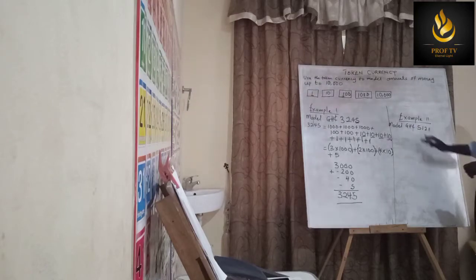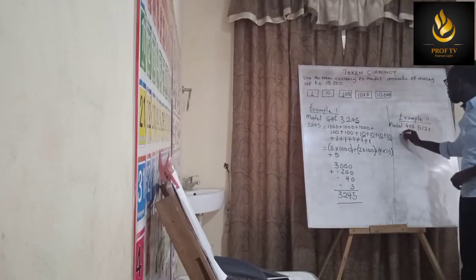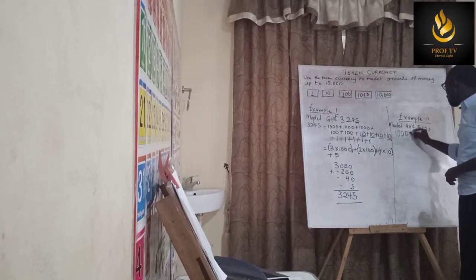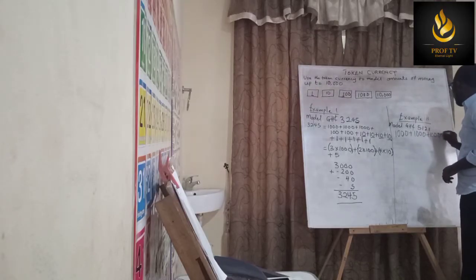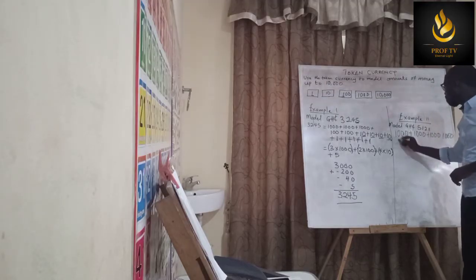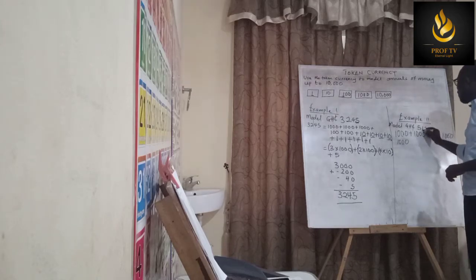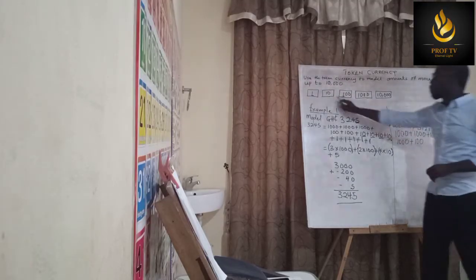Let's look at example two: we are to model 5,121 Ghana cedis. You can use the first method of repeated addition. For five thousand, take one thousand five times — one, two, three, four, five — making five thousand. Then one hundred for the hundred. Then ten plus ten giving twenty for the twenty, and one for the one.